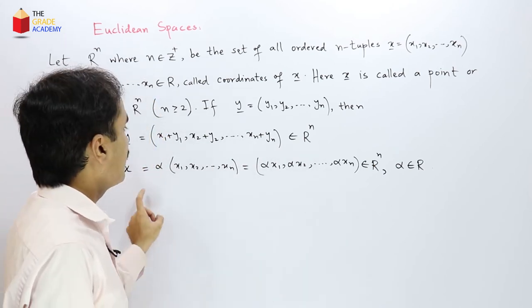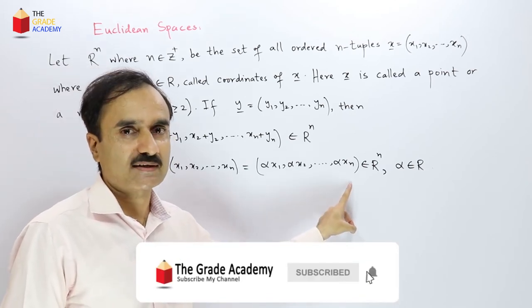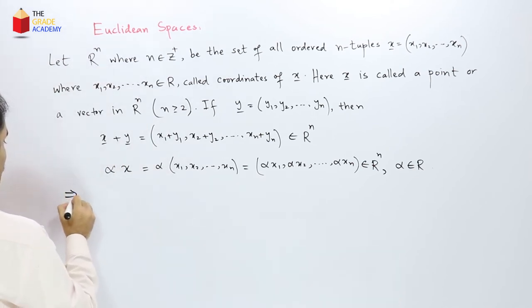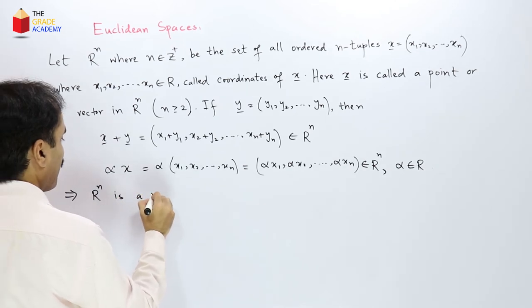So this set Rn satisfies the axioms of a vector space. So this implies Rn is a vector space.